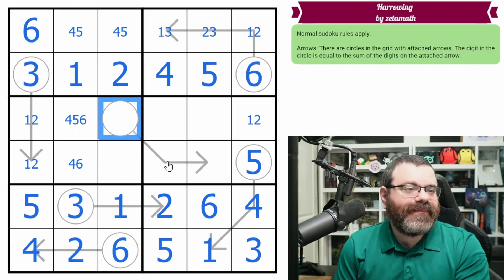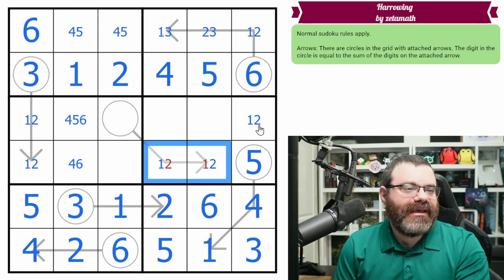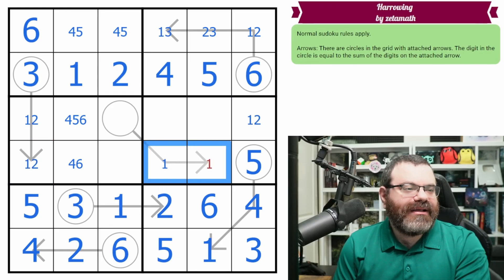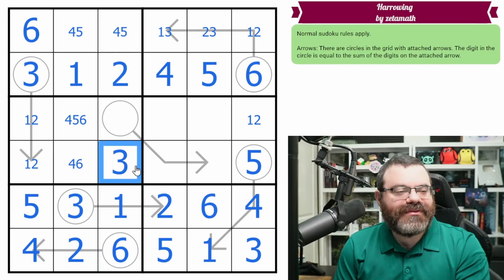We know it doesn't sum to 3. Because this would have to be 1, 2. And now we'd have way too many 1, 2s in the box. We'd have way too many 1, 2s in the row. Right? It would resolve this 1, 2 like this. And there'd be nothing to fill on those. So because it's not 3, there's only one place for 3 in the column. Which is right there.